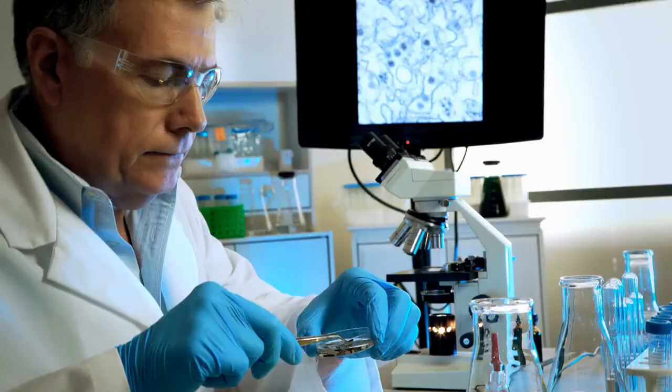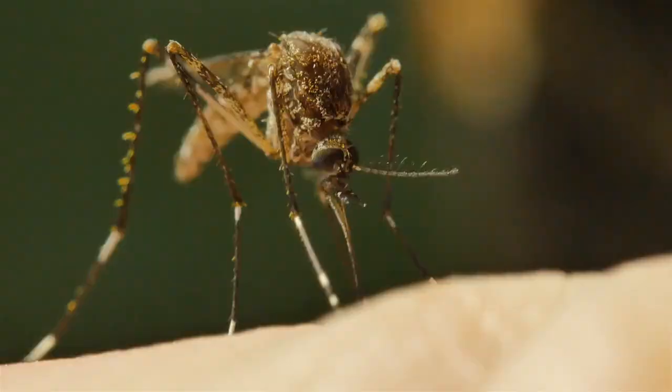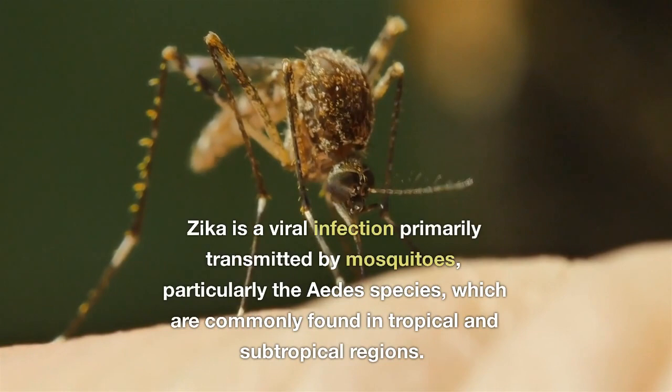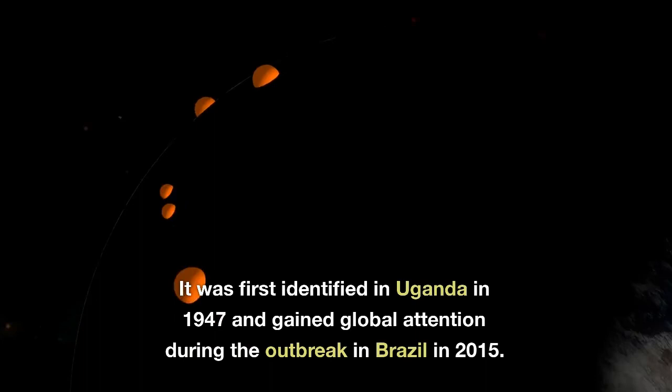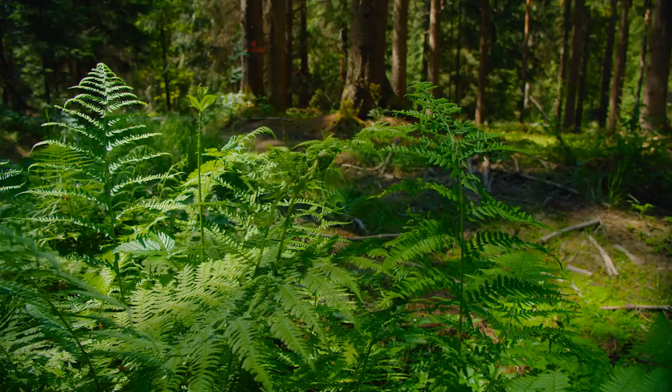What is Zika virus? Zika is a viral infection primarily transmitted by mosquitoes, particularly the Aedes species, which are commonly found in tropical and subtropical regions. It was first identified in Uganda in 1947 and gained global attention during the outbreak in Brazil in 2015. Since then, it has spread to various regions across the globe.